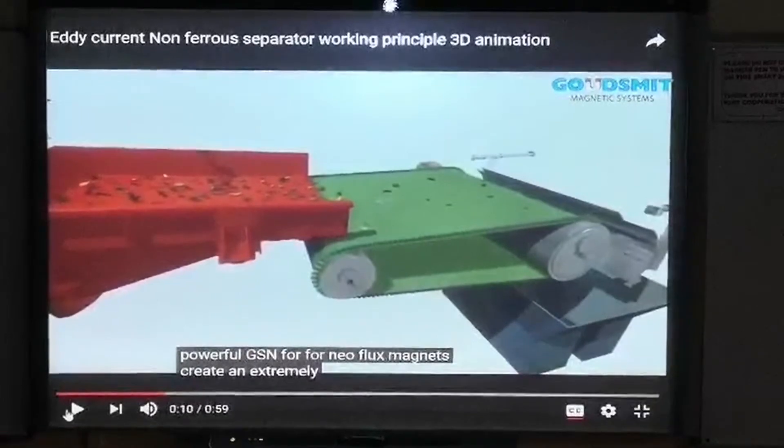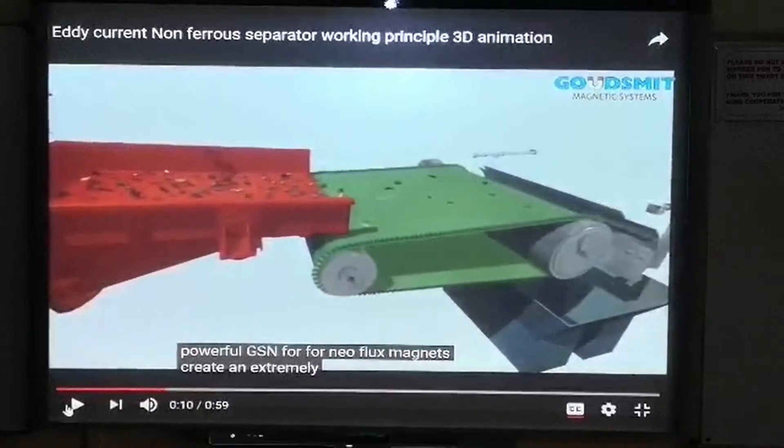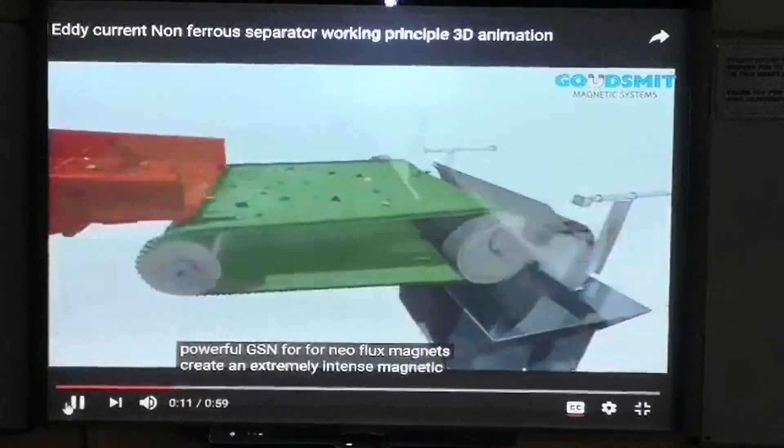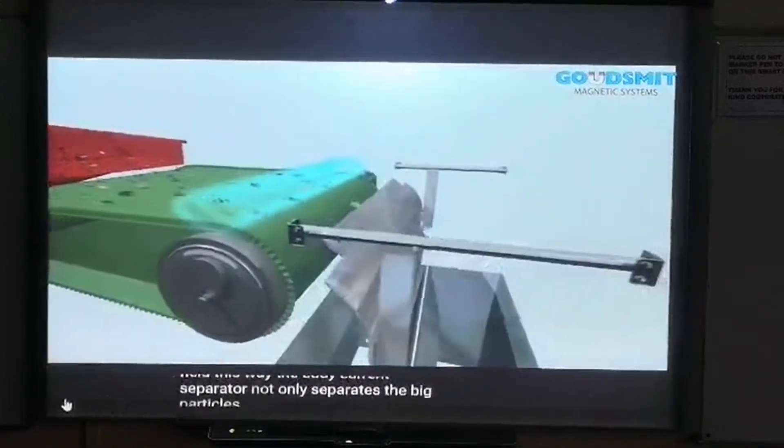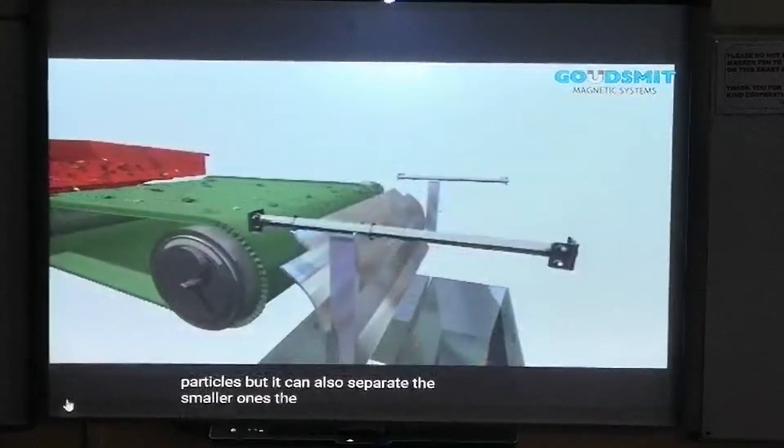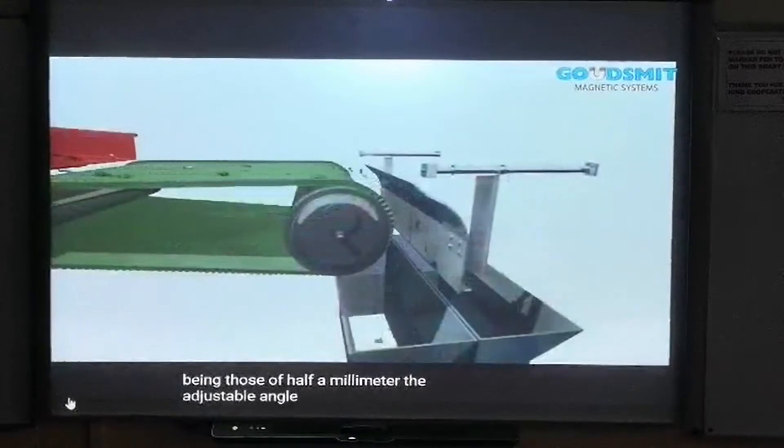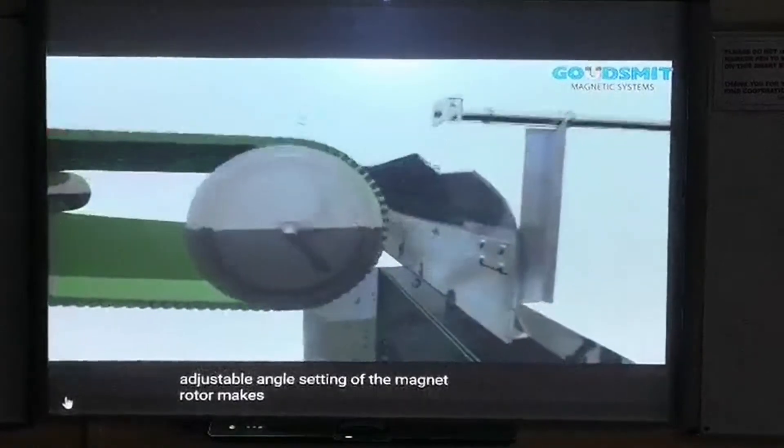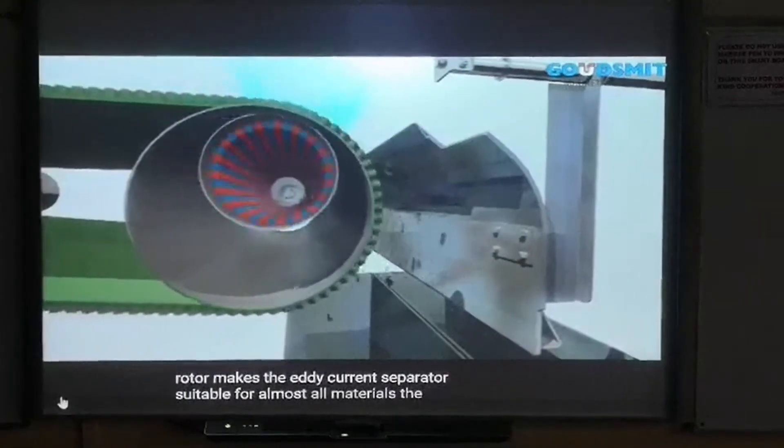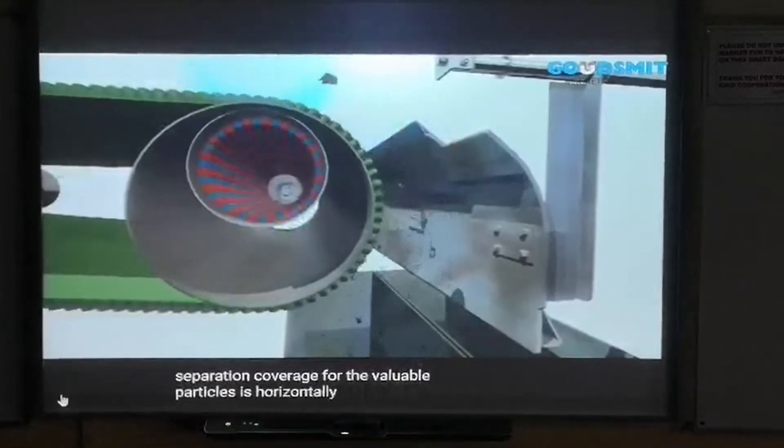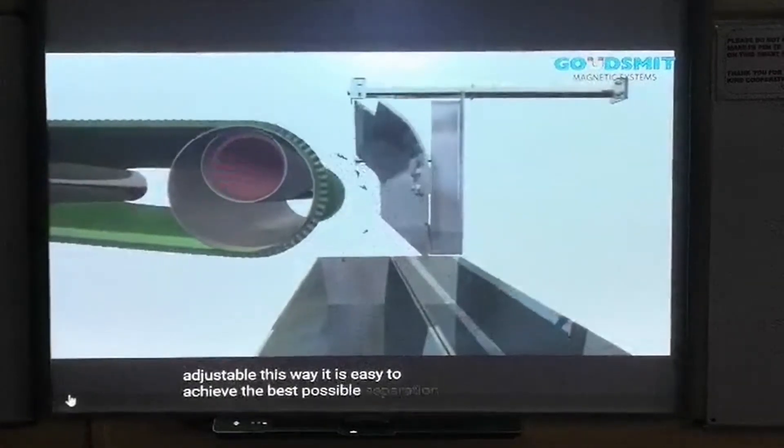Now, let us watch a short video which will help you to comprehend our explanation regarding the separator better. This way, the eddy current separator not only separates the big particles but it can also separate the smaller ones. The smallest particles being those of half millimeter. The adjustable angle setting of the magnet rotor makes the eddy current separator suitable for almost all materials. The separation coverage for valuable particles is horizontally and vertically adjustable. This way, it is easy to achieve the best possible separation.